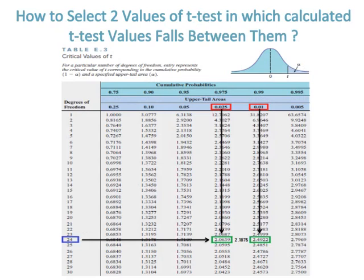Here are the examples how I select two values of t-test in which calculated t-test value of 2.1875 falls between them, in front of degree of freedom which is 24.